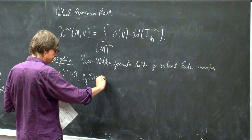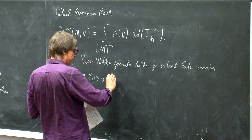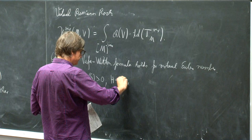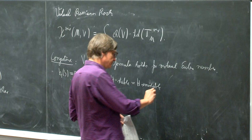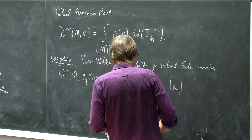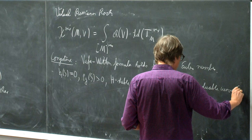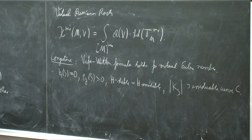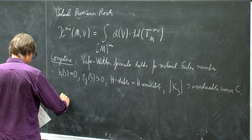There are global holomorphic two-forms on S. I will also assume that H-stable equals H-semistable, so that the moduli space only consists of stable sheaves. For simplicity I also assume that the canonical linear system contains an irreducible curve — a curve C which is irreducible, in just one piece, which is the zero set of a holomorphic two-form.